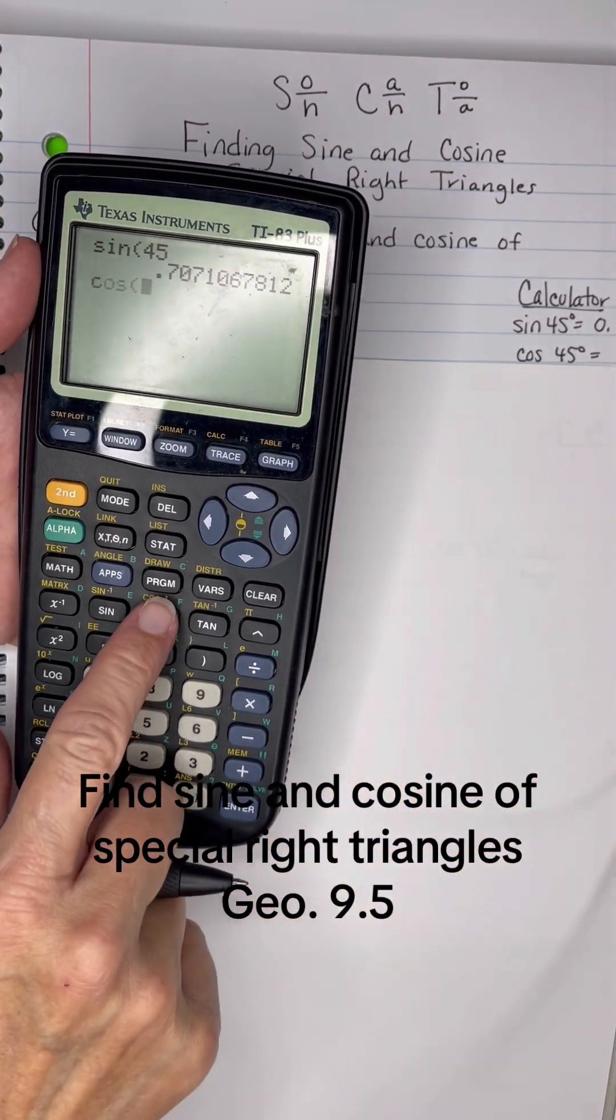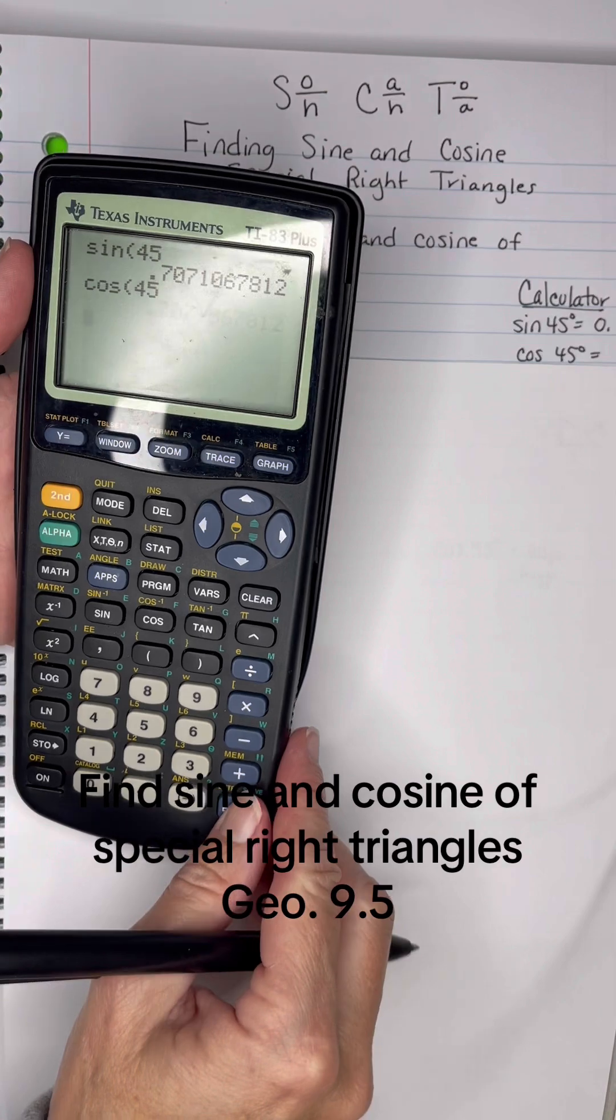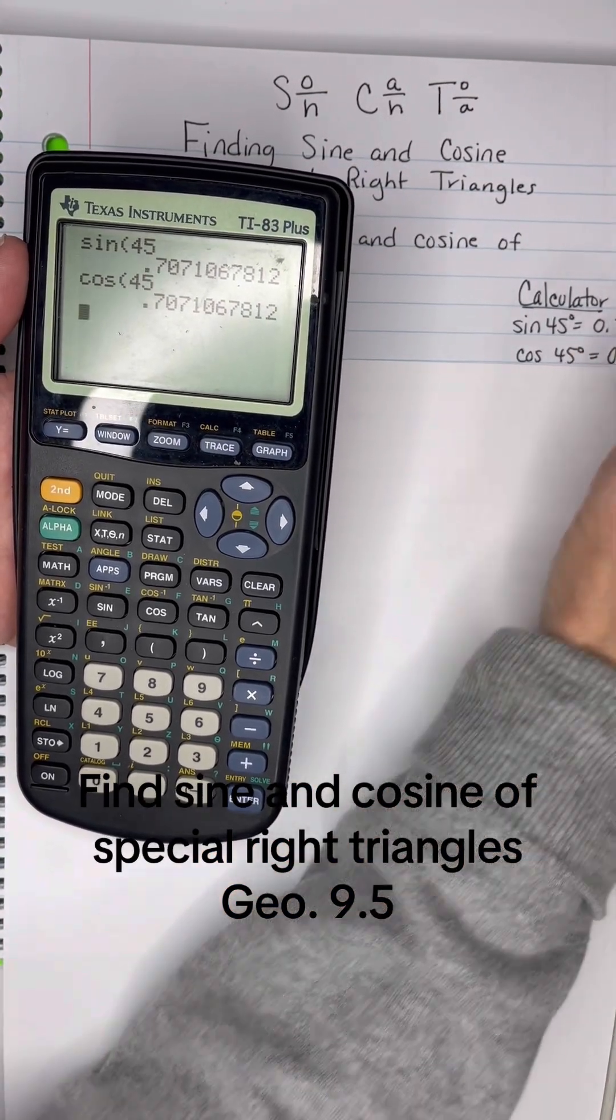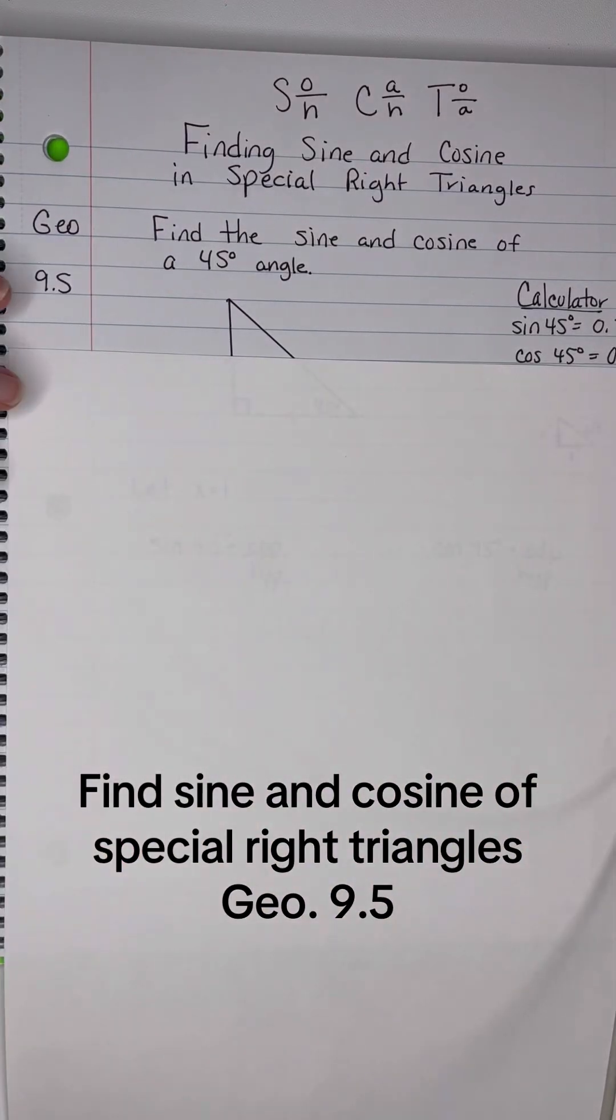And then let's do cosine. Cosine of 45, of course that's the same thing, 0.7071. Okay, we know what they're supposed to be.